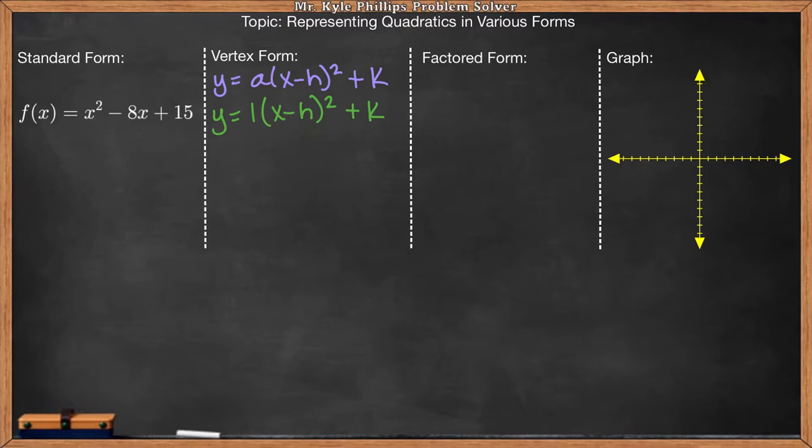So we can go ahead and start by saying 1 times (x minus h) squared plus k. Now, h and k, this is the vertex. So h is the x value of the center of the parabola. So the easiest way to find h here, since h is the x value of the center of the parabola, is to use our axis of symmetry formula. So here, that is x equals negative b all over 2a. This is going to give you the x value.